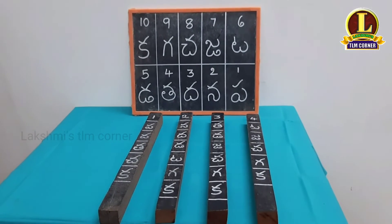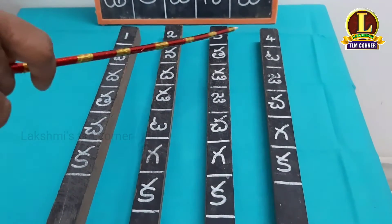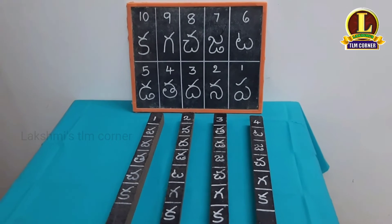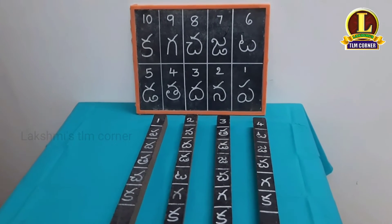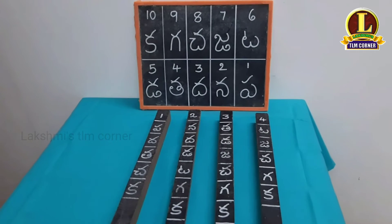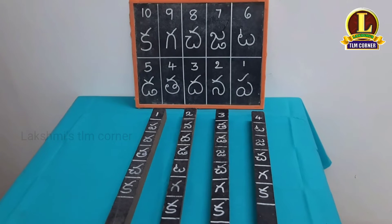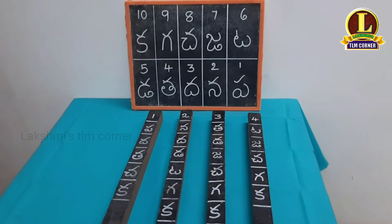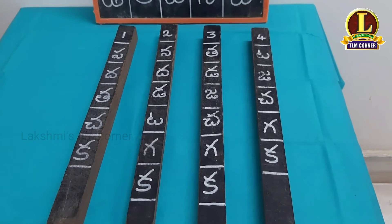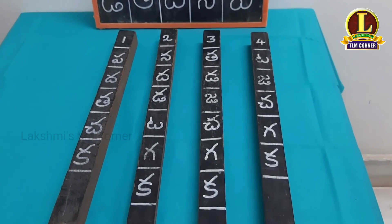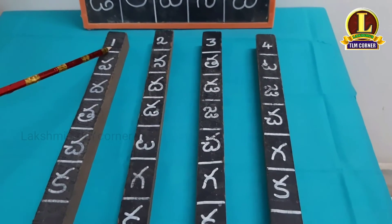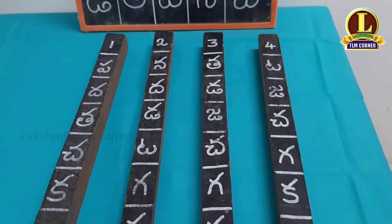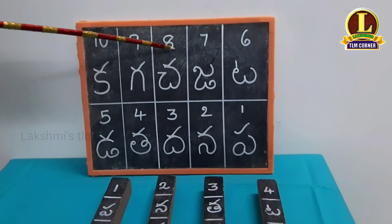Do you know the trick behind it? Okay, let's see. Here there are four numbers. Let's consider an example. I have chosen the letter CHA. The letter CHA is in the first line. In the second line, the letter CHA is not there. And in the third line, it is there. It is there in the fourth line too. So, you have to count the sum of numbers. As per my example, 1 plus 3 plus 4 is equal to 8. So the eighth numbered letter is CHA.